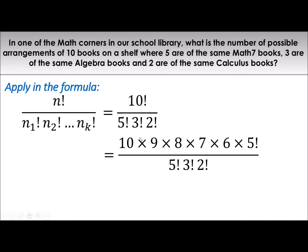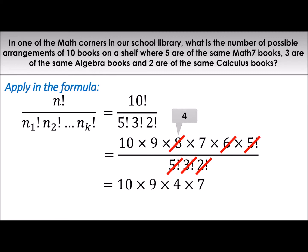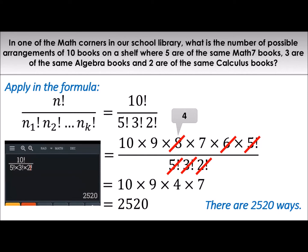What if wala tayong calculator? We could also simplify it — i-expand lang yung 10 factorial until may makita tayong pwedeng macancel on the denominator, hanggang 5 factorial. The 3 factorial has value 6, so pwede mo silang i-cancel. And the 2 factorial has value 2 — pwede mong i-cancel sa kahit na anong number na divisible by 2. I chose 8, so 8 divided by 2 is 4. Multiply the remaining: 10 times 9 times 4 times 7. The answer is 2,520.